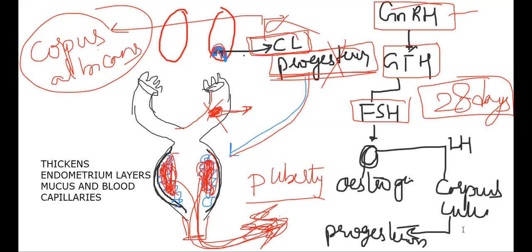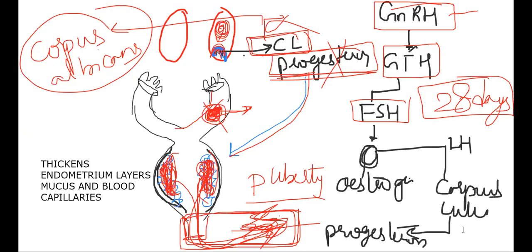Now let's go through the textbook description. The menstrual cycle begins with the liberation of the endometrium layer, releasing mucus and blood capillaries from the uterus — that is the first stage. Then a new primary follicle matures into a Graafian follicle. Next is ovulation. After ovulation, the remaining is called corpus luteum, which secretes progesterone to thicken the endometrium layer. This cycle continues.